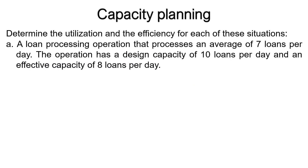Let us solve a problem. Determine the utilization and the efficiency for each of these situations. A: A loan processing operation that processes an average of 7 loans per day. The operation has a design capacity of 10 loans per day and an effective capacity of 8 loans per day.